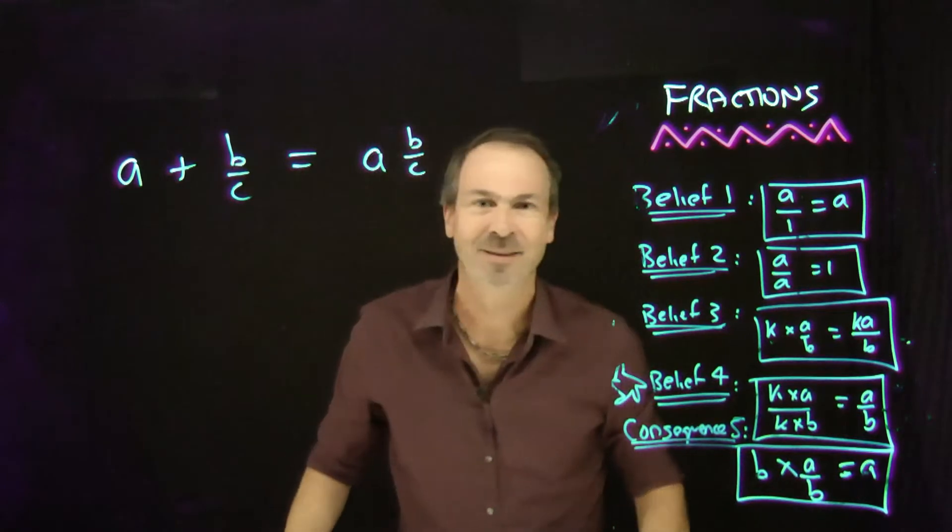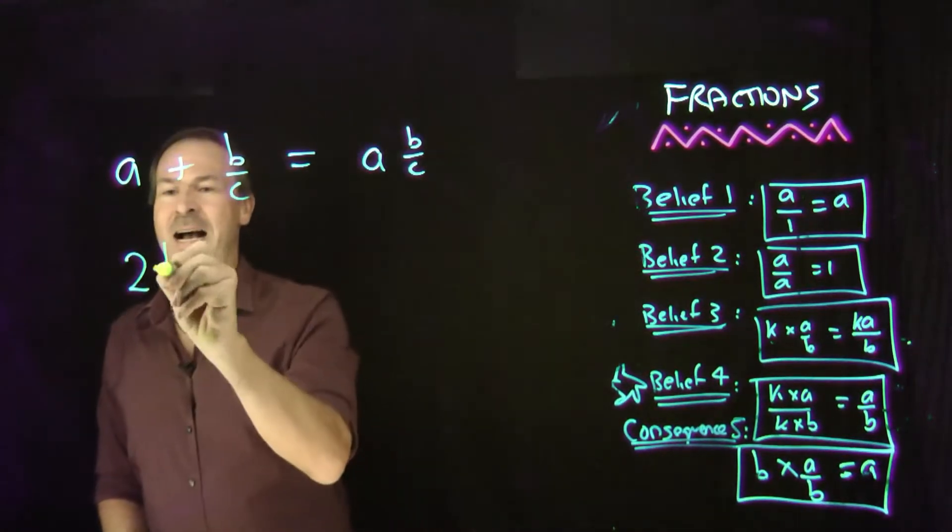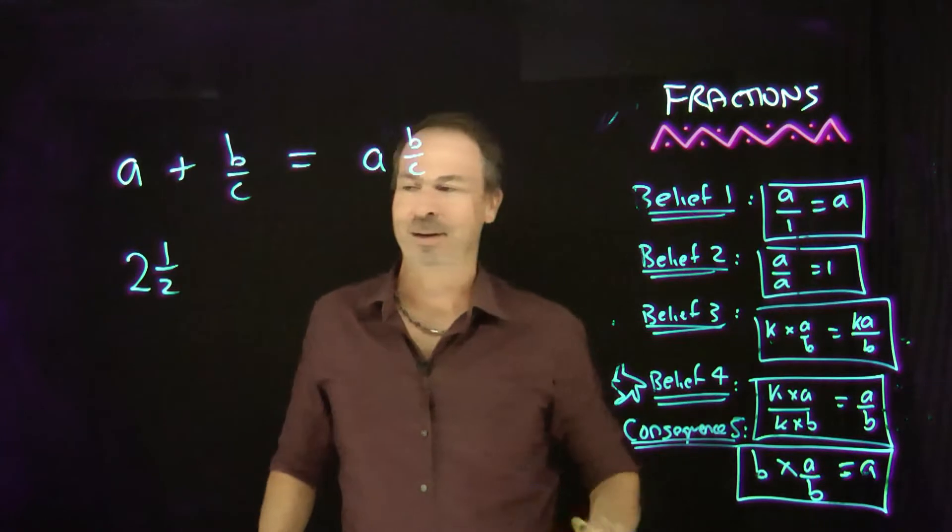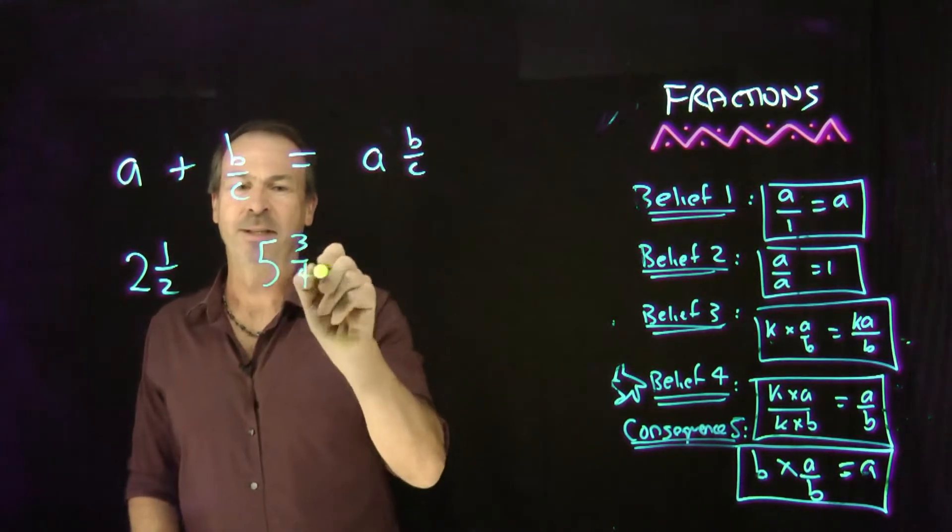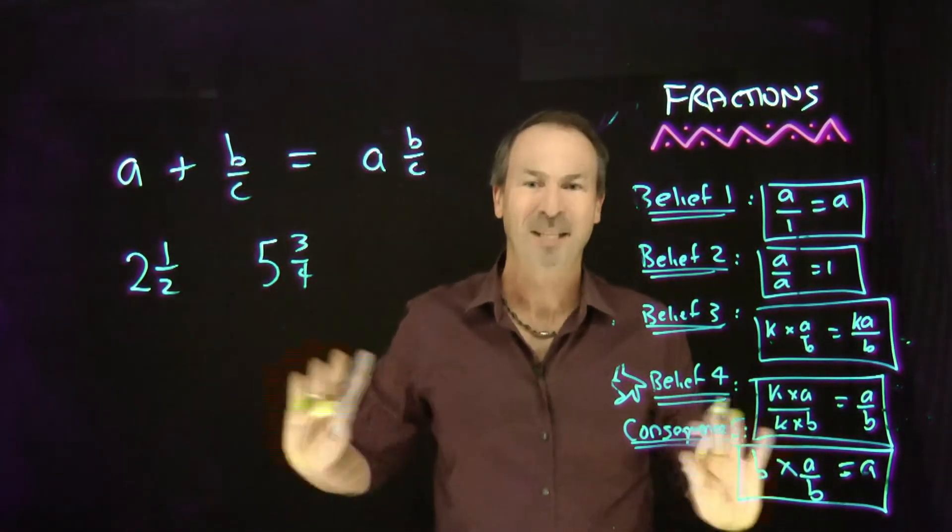So for example, 2 and a half, which is really 2 plus a half, is a mixed number. And 5 and 3 quarters is really 5 plus 3 quarters, it's a mixed number.